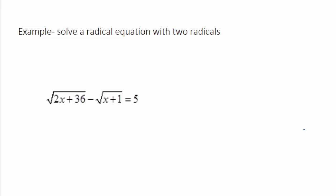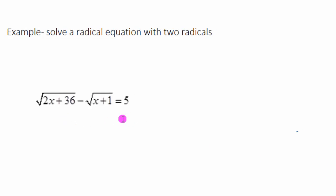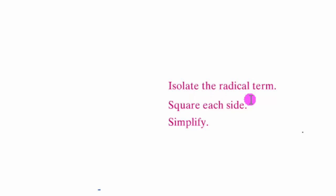In this video, we're going to solve a radical equation that has two radicals. We're going to want to isolate the radical term. When it's got two radicals like this one does, you're going to want to isolate one radical term on each side of the equal sign. Then we're going to square each side, and we're going to be really careful when we square the sides because that may involve FOILing in some instances.